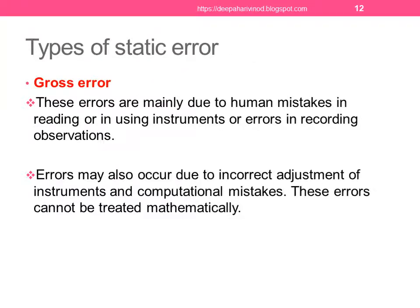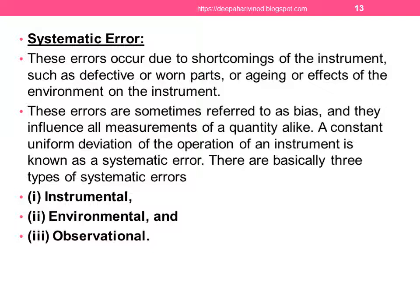Types of error. Gross error - these errors are mainly due to human mistakes in reading or using instruments or errors in recording observations. Errors may also occur due to incorrect adjustment of the instrument and computational mistakes. These errors cannot be treated mathematically. Gross error is mainly due to human error, adjusting of the instruments, improper observation, and mathematical calculation mistakes.